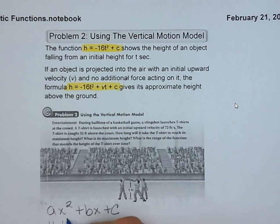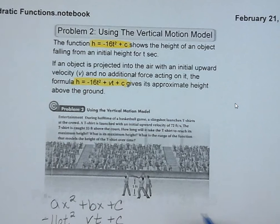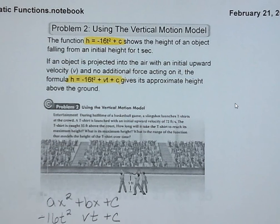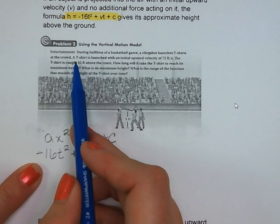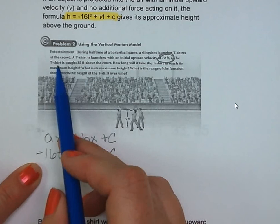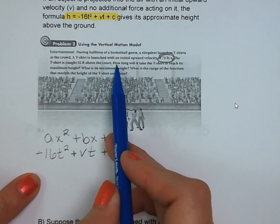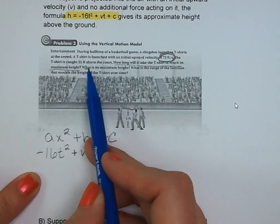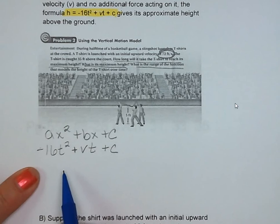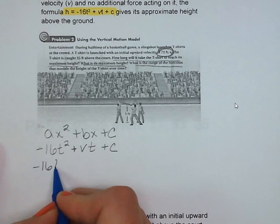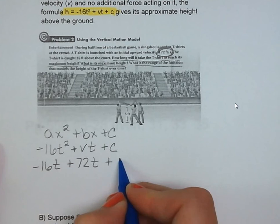Once we launch it, it doesn't have any more forces acting on it other than gravity. So we have our equation, negative 16t squared. In our word problem, we're launching a t-shirt with one of those giant slingshots, and it's going up at 72 feet per second. Somebody catches the t-shirt 35 feet above the court. We want to know how long it's going to take the t-shirt to reach its maximum height and what is that maximum height. So we're going to be looking for that vertex. We've got negative 16t squared plus 72t plus 5, because we are launching this t-shirt from 5 feet off the ground.